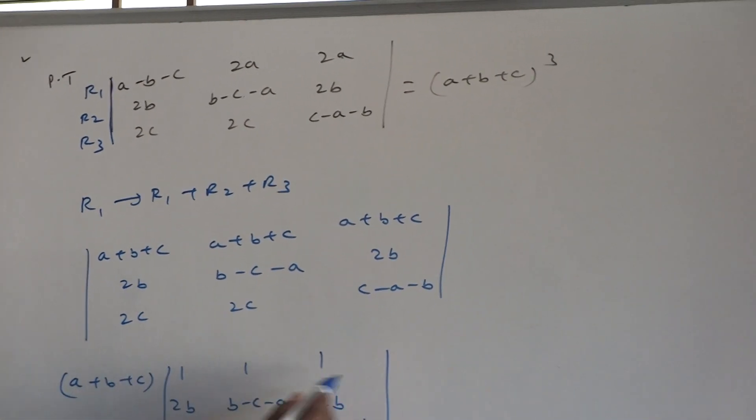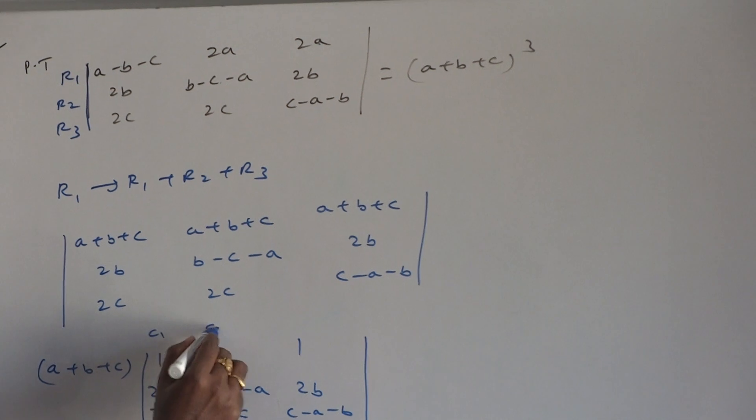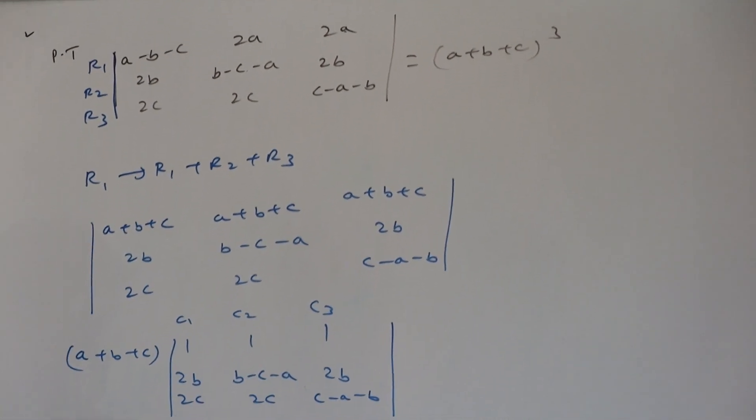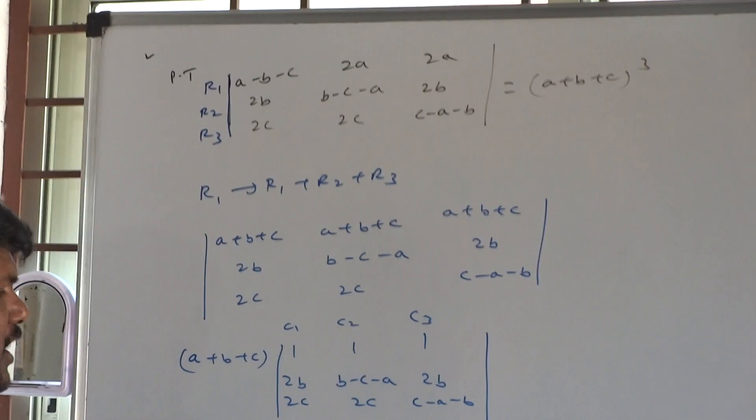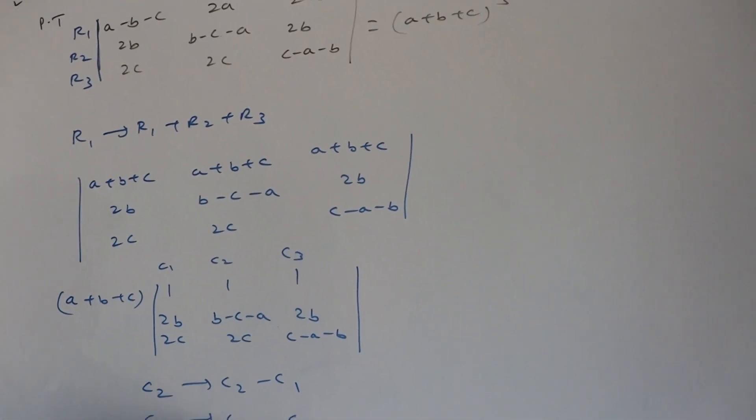Now, in first row we have all the elements 1. This is C1, C2, C3. C2, column 2 implies C2 minus C1. Column 3 implies column 3 minus column 1.